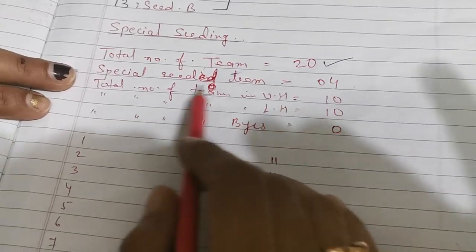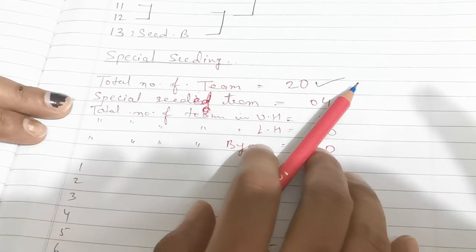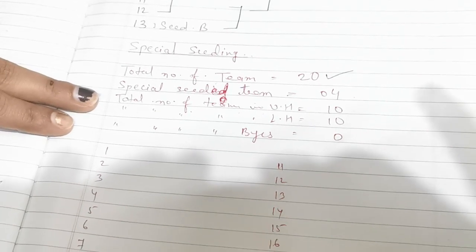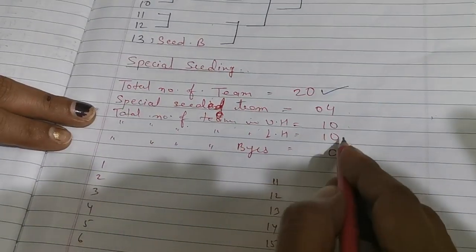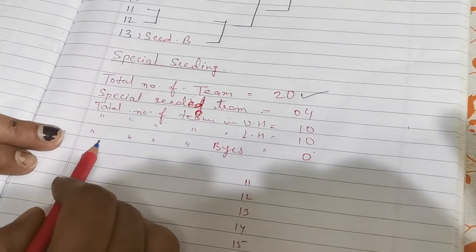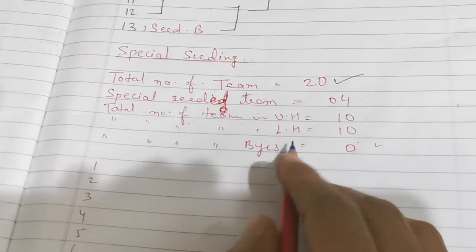Now total number of teams in upper half is 10, because total number of teams is 20, divided by 2. Total number of teams in upper half is 10 and lower half both the 10. Now total number of byes here I have written 0, why it is 0?